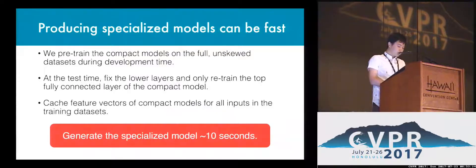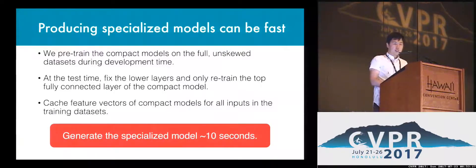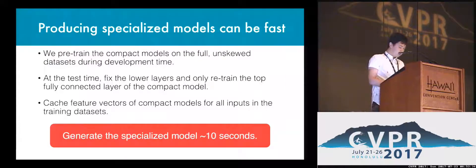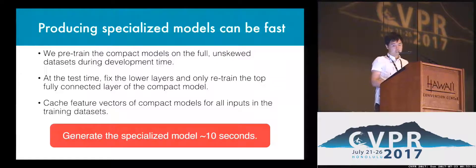Because we need to train this specialized model online, we need to be fast. The way we do this is by pre-training the lower layers of the compound model and only retargeting the top layer at runtime for dominant classes. This is super fast, and the training only takes a few seconds.